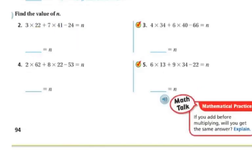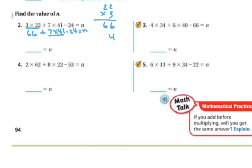There's not a lot of room but I'm going to try. First: 3 times 22. So 22 times 3: 3 times 2 is 6, 3 times 2 is 6. So this is 66, plus 7 times 41 minus 24 equals n. Now I'm going to do 7 times 41. So 41 times 7: 7 times 1 is 7, 7 times 4 is 28. So 287. Minus 24.